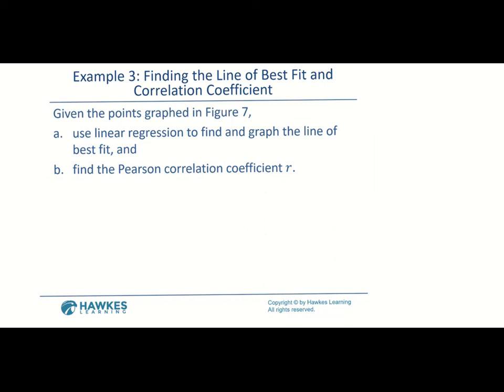We'll also look at the Pearson correlation coefficient R. We'll use the least squares method and show how to do it by hand first, since there's also a calculator function for it. I'll introduce some new symbols along the way to help you through the process.